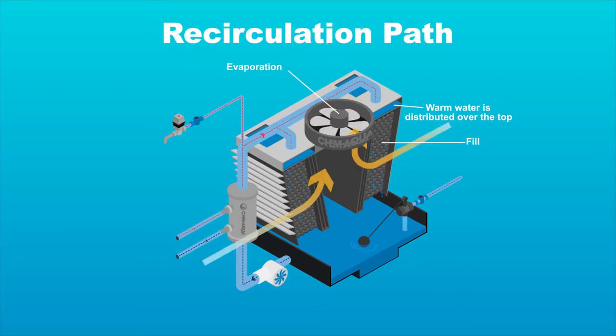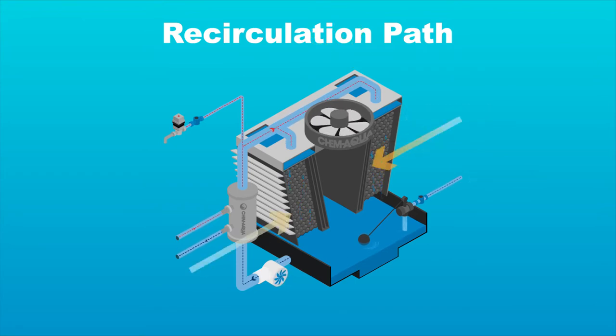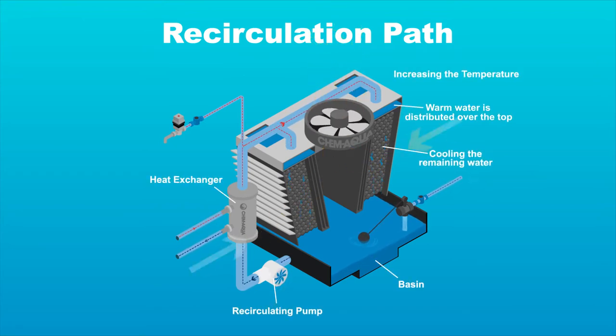Contact with the air causes a portion to evaporate, cooling the remaining water. The loop then repeats, with cooled water from the basin pumped through a heat exchanger, and so forth.